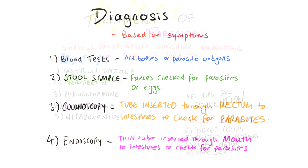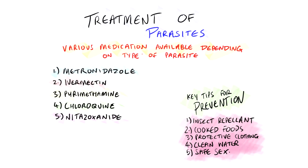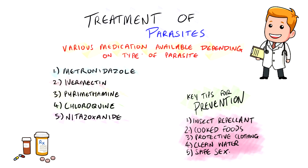There are various medications available to treat parasites. These medications can either be used to kill the parasite or to treat the symptoms associated with parasite infection. A list of common medications which can be prescribed is included, but the indication depends on what type of parasite is present.